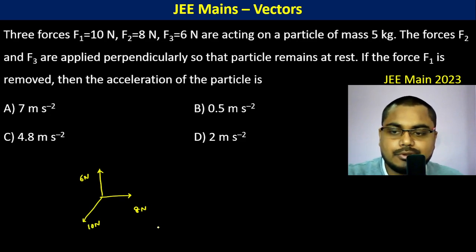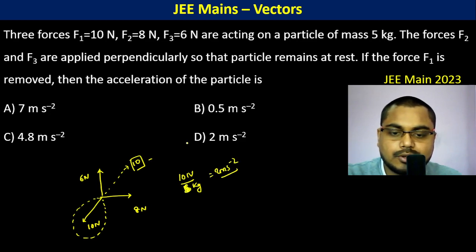So the force F1 is removed. If this is removed, then the acceleration of the particle is actually the resultant in this direction is 10. So therefore the acceleration of the particle is 10 newton divided by 5 kg, which is 2 meter per second squared, D.